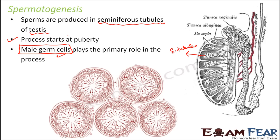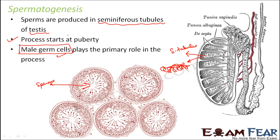If you look at the cross section of a seminiferous tubule — each of these tubules is a highly coiled tube-like structure. Looking at the cross section, you can see structures with a head and a tail, which are nothing but sperms. So the sperms are actually produced in the lumen — the center — of the seminiferous tubule.